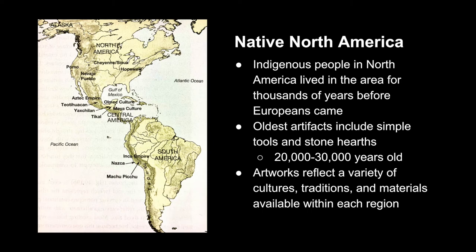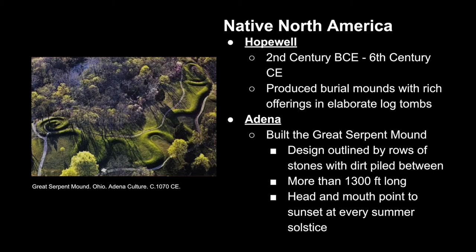The Hopewell culture, which flourished in the 2nd century BCE until the 6th century CE, was located in modern-day Ohio. They produced many burial mounds with rich offerings found within elaborate log tombs. They were followed by the Adena people, who were also in Ohio, and they created the Great Serpent Mound. It was designed by outlining rows of stones and then piling dirt in between. The spiral portion is the tail of the snake, and the form serpentines up toward an open mouth holding a circular object.